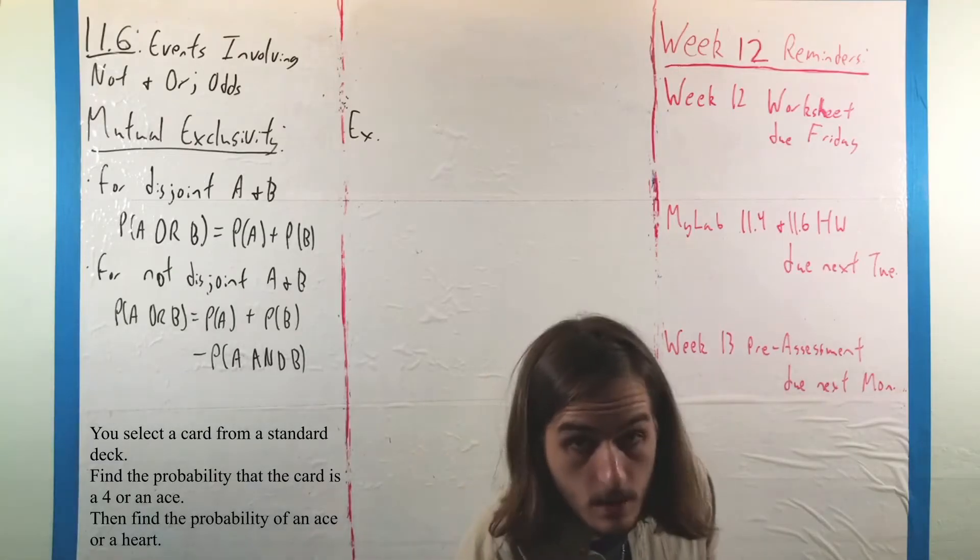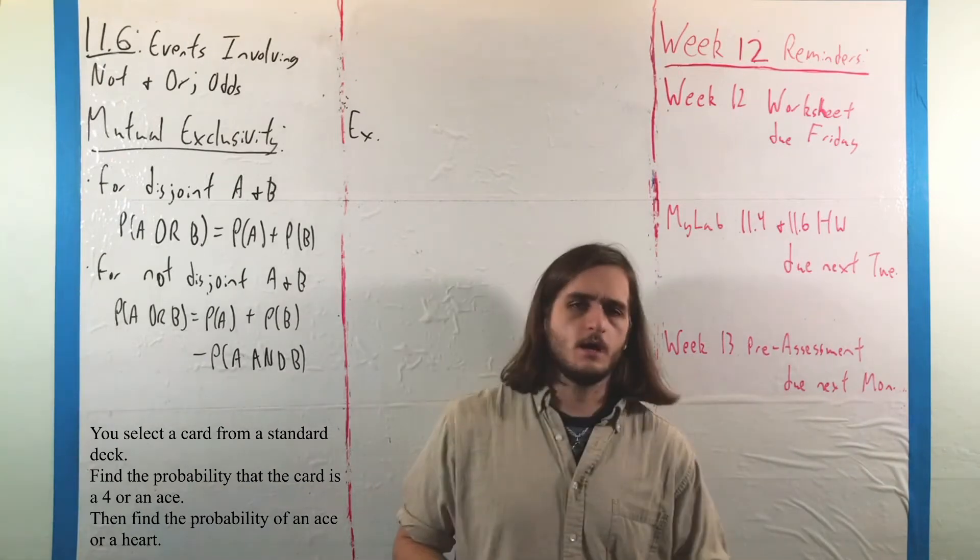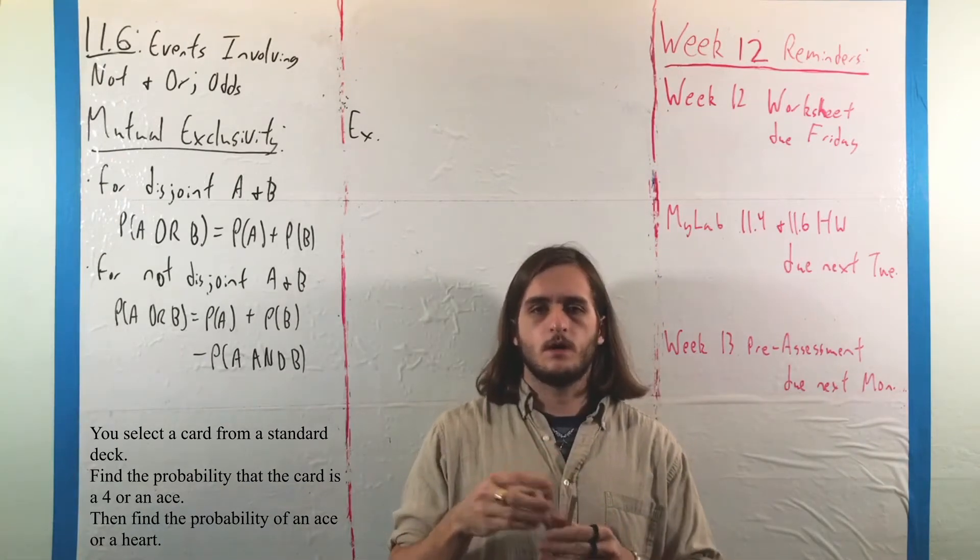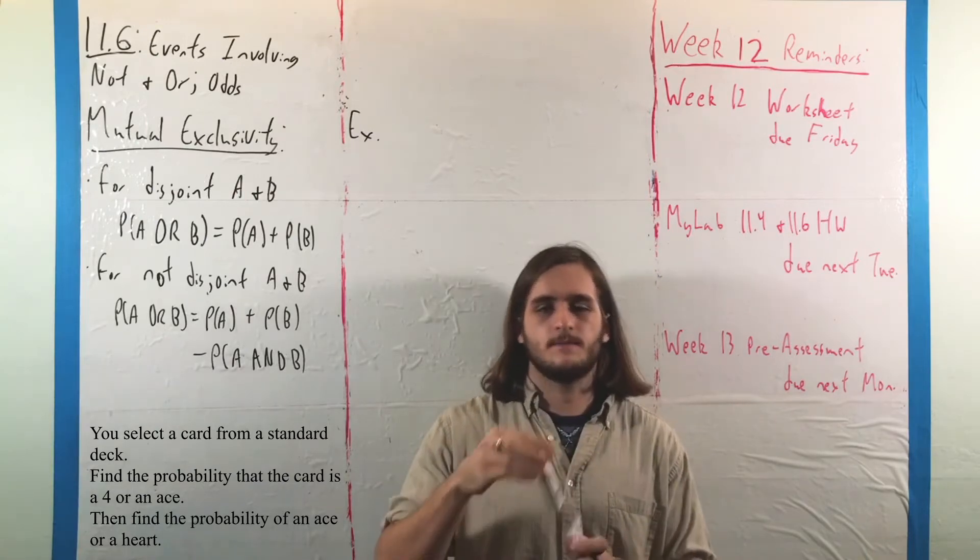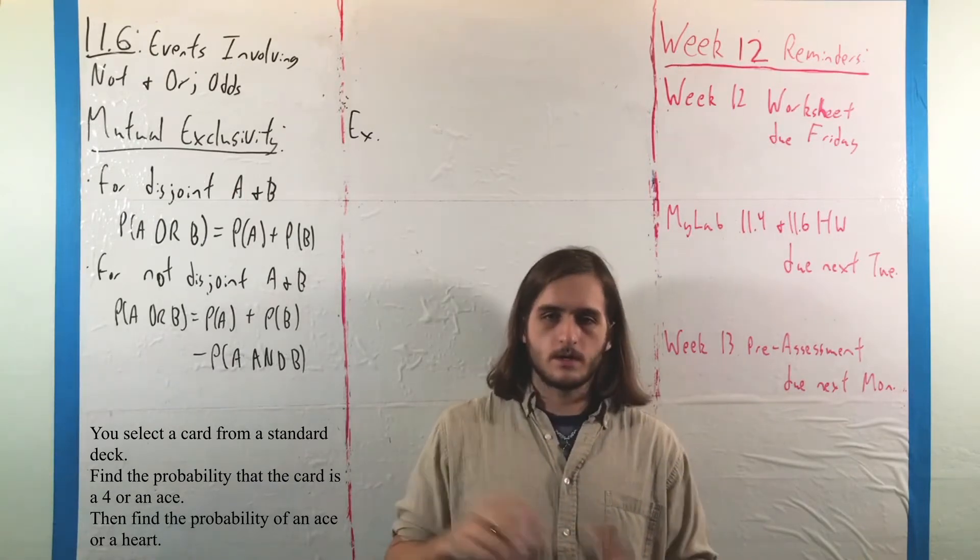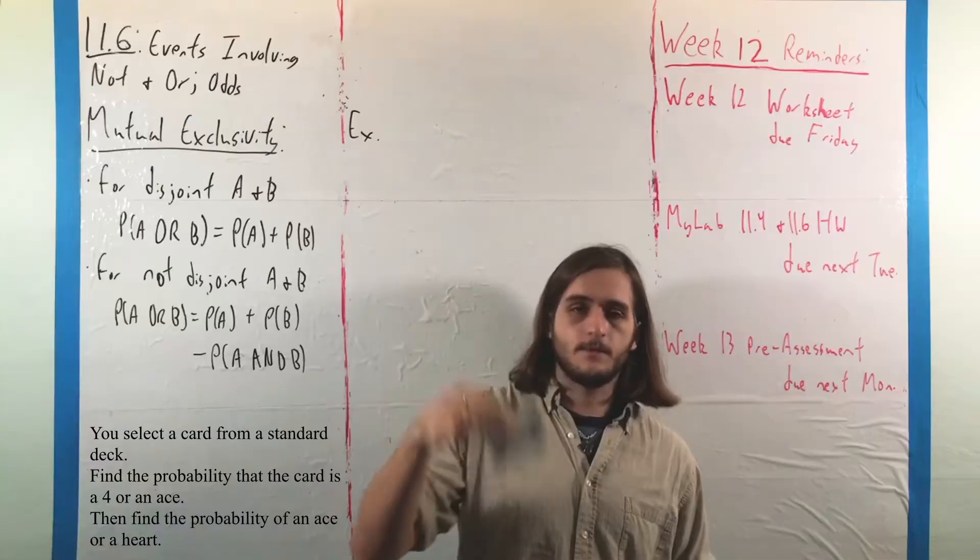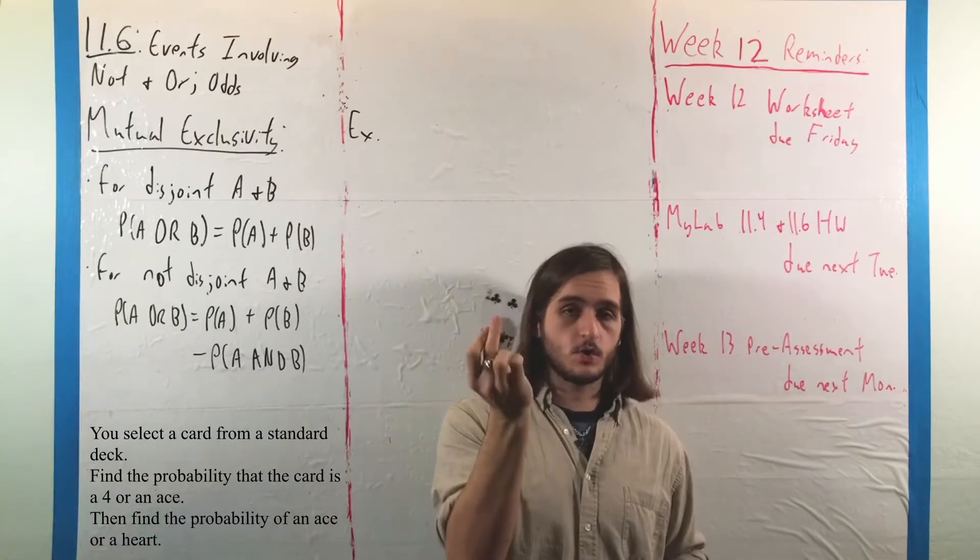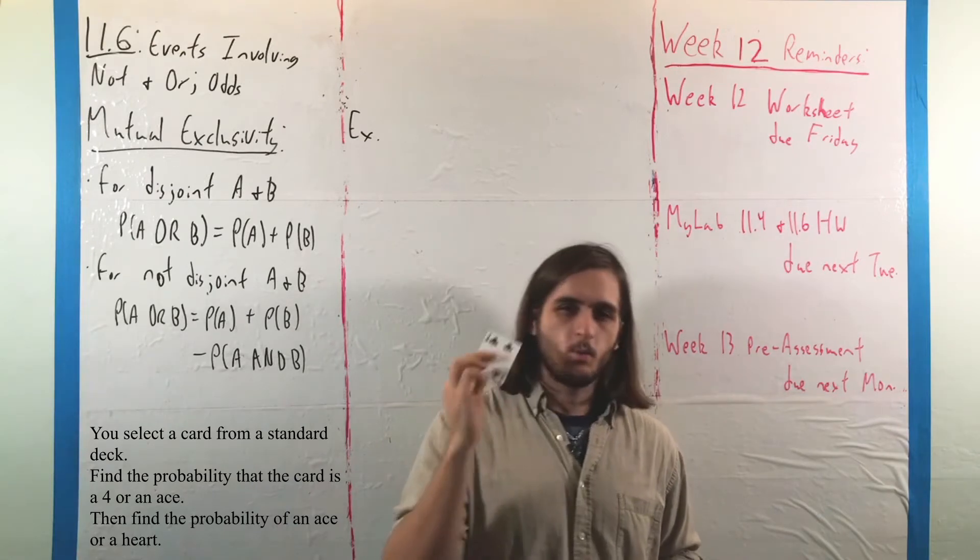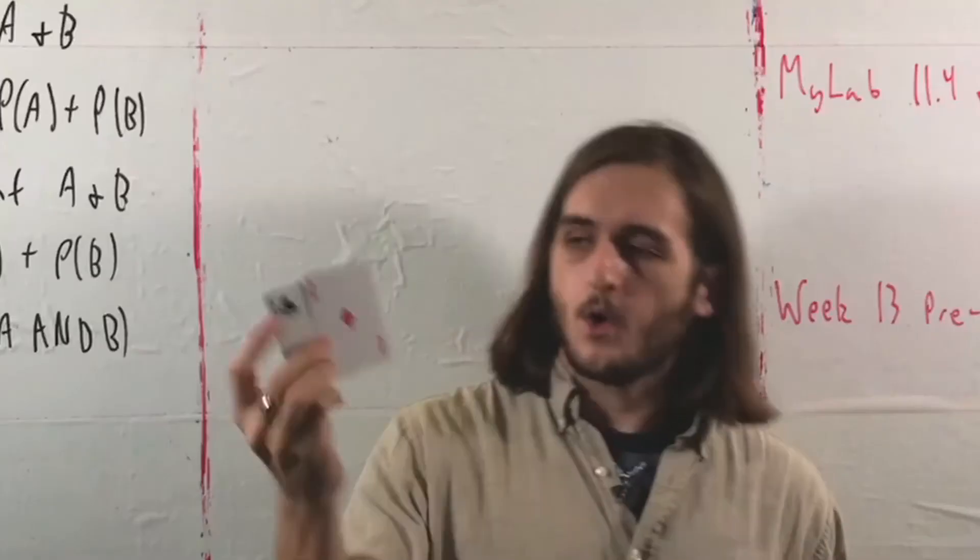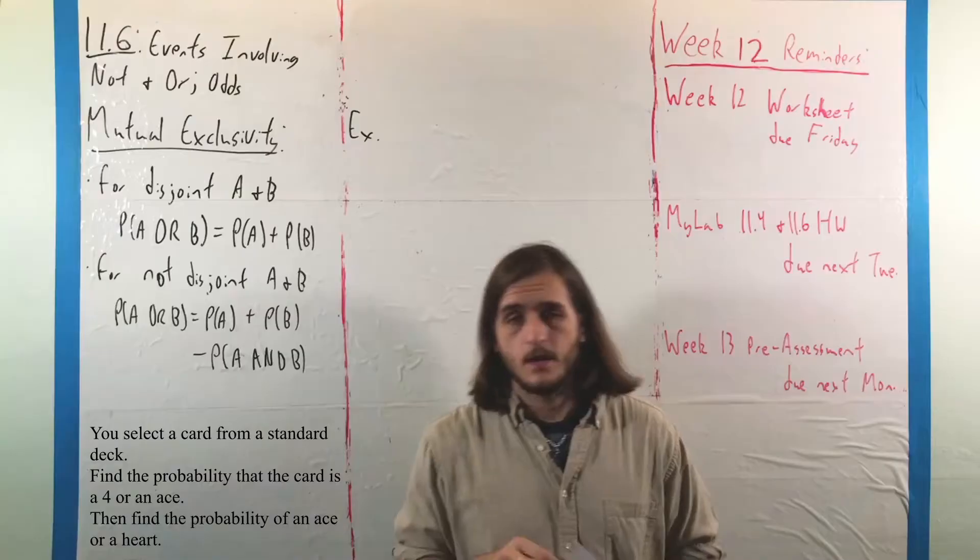The first thing we really need to do here with this example is be careful that when we're drawing our card, we're not drawing one card and then throwing it away. We're saying we're going to draw this one card, and we want to think about what happens with this one card, whether it's a 4 or an ace.